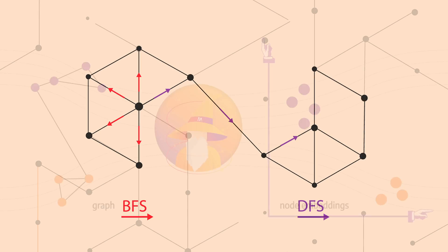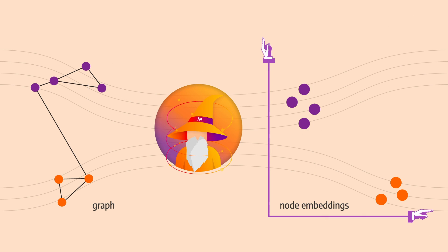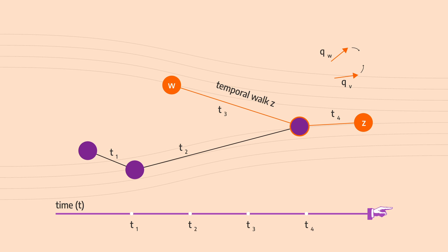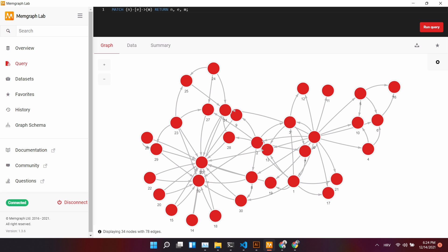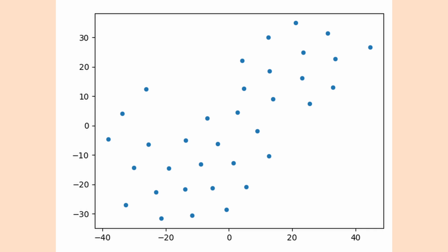Node2Vec is an embedding method that transforms graphs into numerical representations — a low-dimensional vector of data called features — that you can use in your machine learning algorithms. Dynamic Node2Vec runs and updates these transformations in real time, so all your nodes in a graph are always up to date and immediately available to be used with a machine learning system.